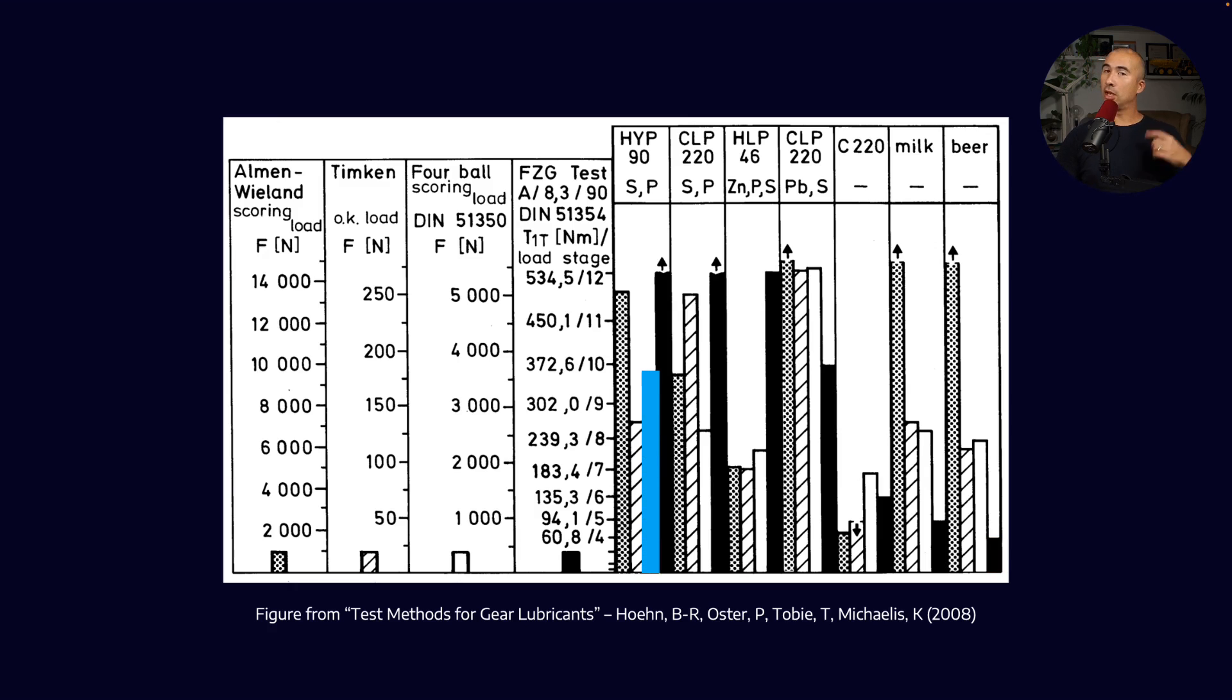The CLP 220, which contained both lead and sulfur, didn't perform quite as well, but it still has some EP performance to it. A straight C220 base oil obviously didn't perform as well as the additized versions because obviously heavily loaded situations is where we start to rely on the additive package.